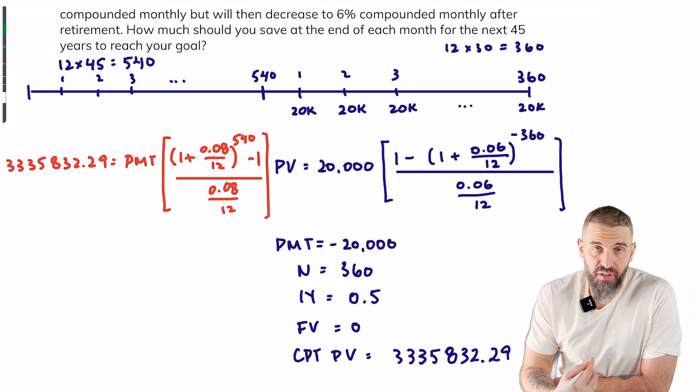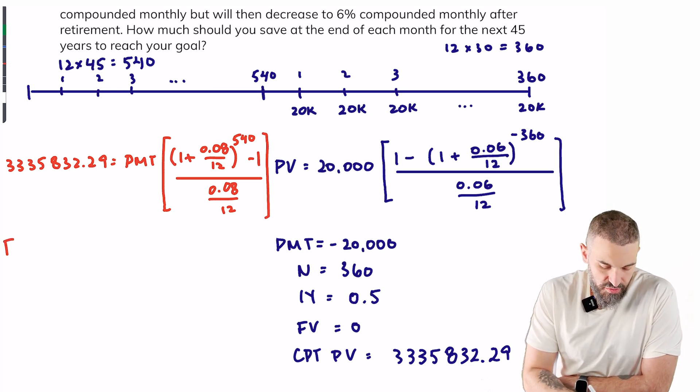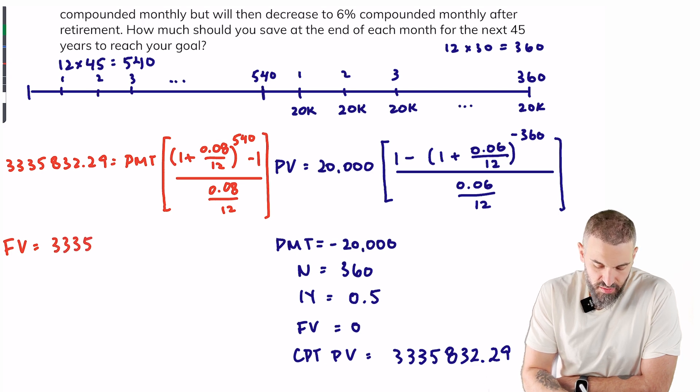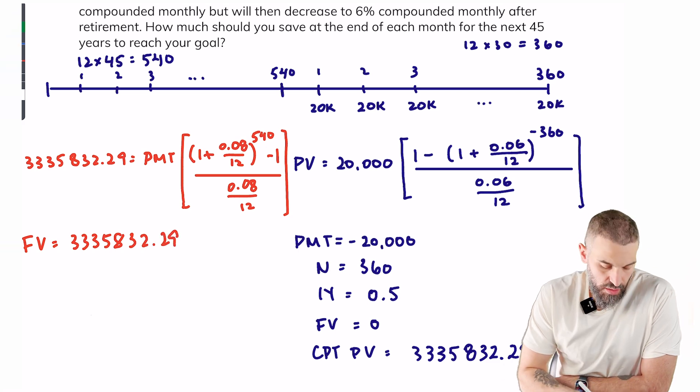Again, if you're using a financial calculator, you'll set your future value $3,335,832.29, your I/Y is 0.666 repeating, that is 8 divided by 12.